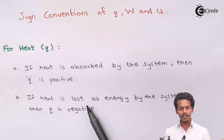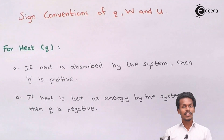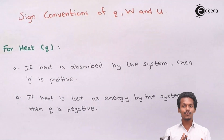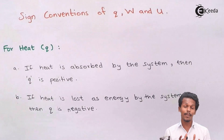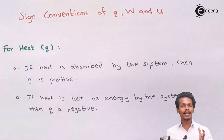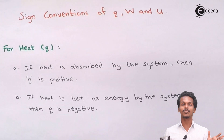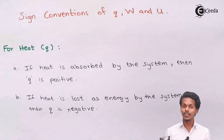If heat has been lost as energy by the system, then Q is said to be negative. When there is an exchange of heat between system and surrounding, if heat is lost from the system and moved towards the surrounding, that amount of heat removed from the system is indicated with a negative sign. The negative sign indicates that heat has been lost from the system to the surrounding.